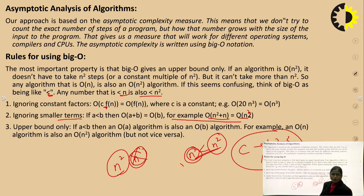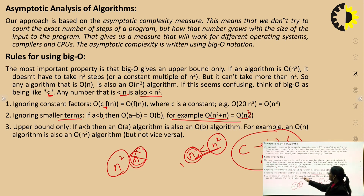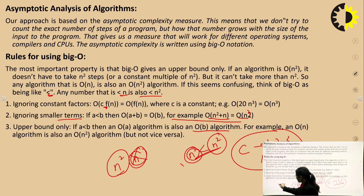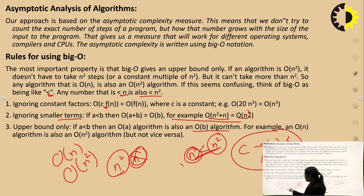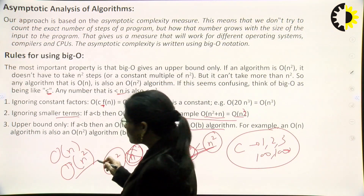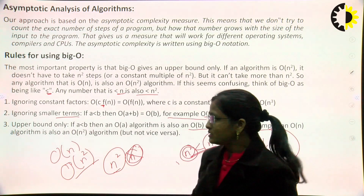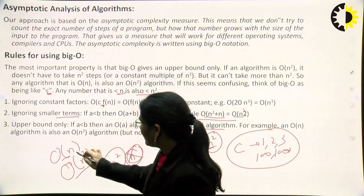Third point is upper bound only: if a < b, then an O(a) algorithm is also an O(b) algorithm. For example, if any algorithm takes O(n) time, it can also be executed in O(n²) time, but not vice versa — if an algorithm takes O(n²), that does not mean it takes only O(n) time.